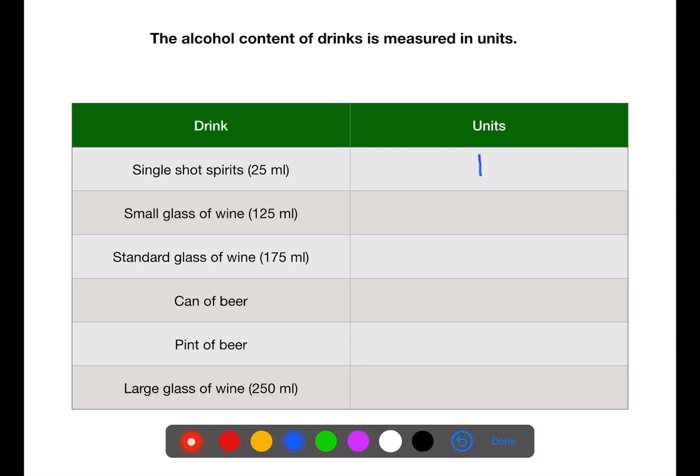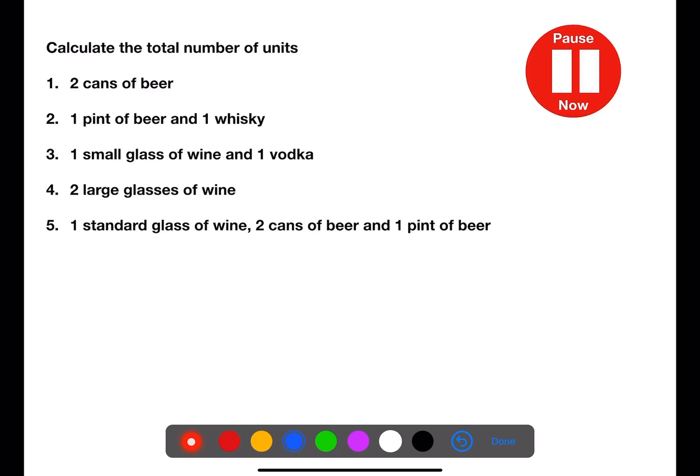A small glass of wine at 125ml is 1.5 units. And a standard glass of wine at 175ml is 2 units. A can of beer is also 2 units whereas a pint of beer is 3 units. A large glass of wine at 250ml is also 3 units. Pause the video now and calculate the total number of units.